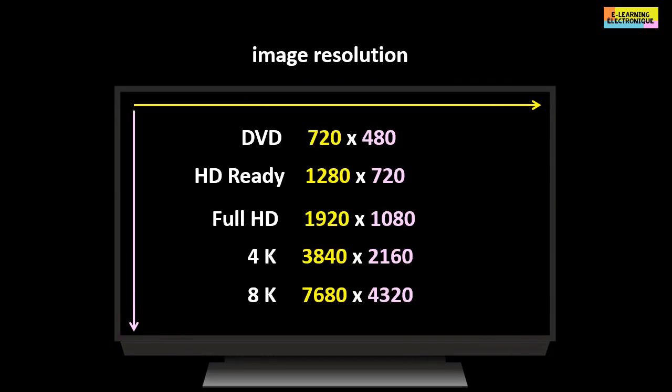The higher the number of pixels in an image, the better the image resolution. On 16 to 9 format screens, an 8K image for example contains 33 million pixels.